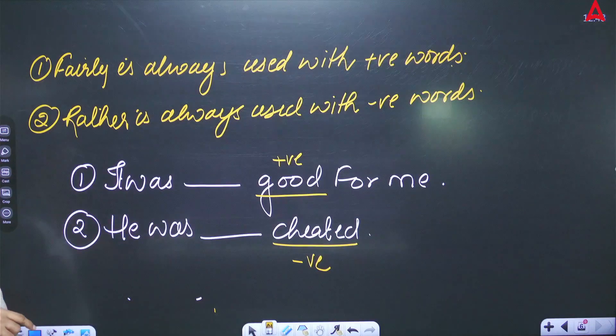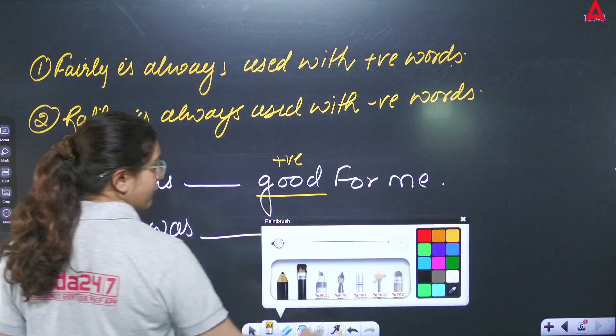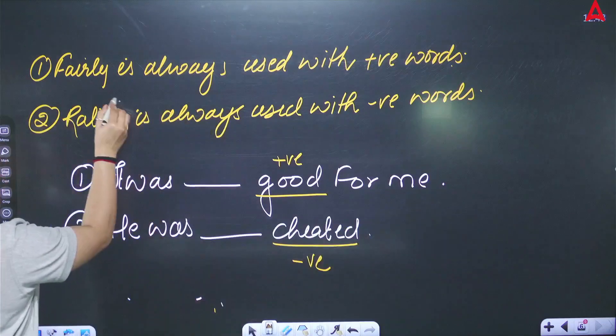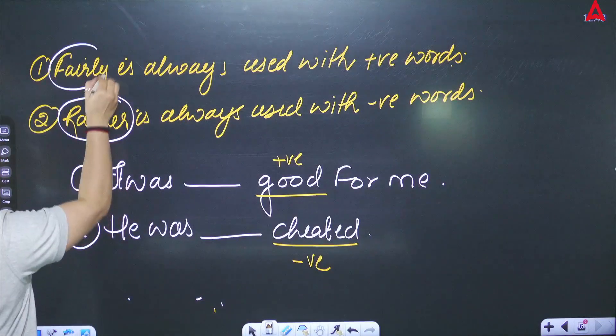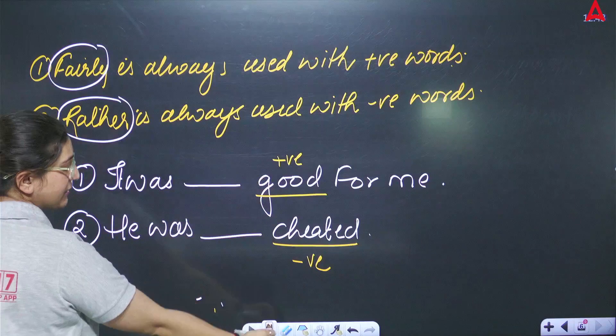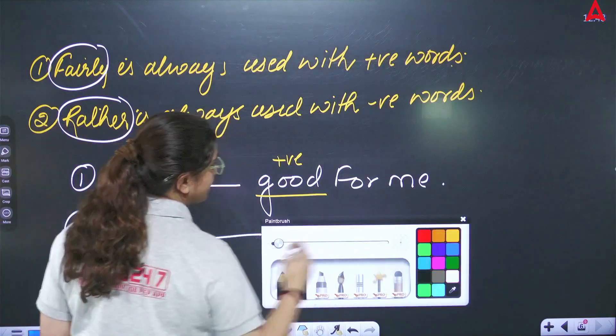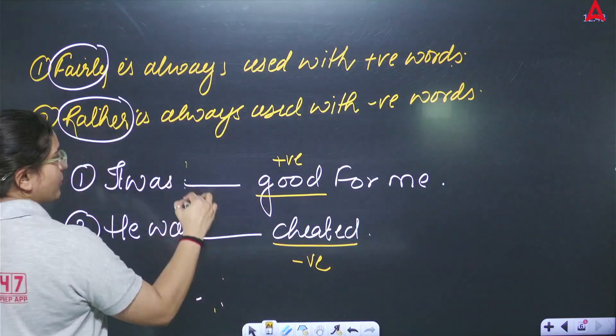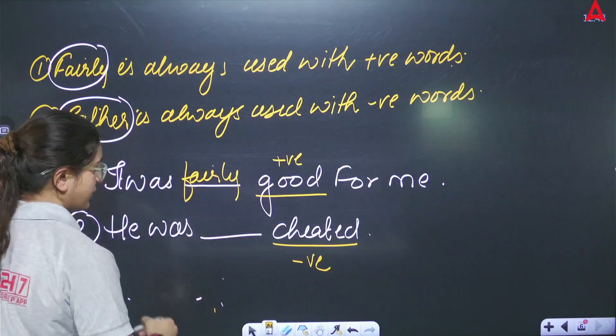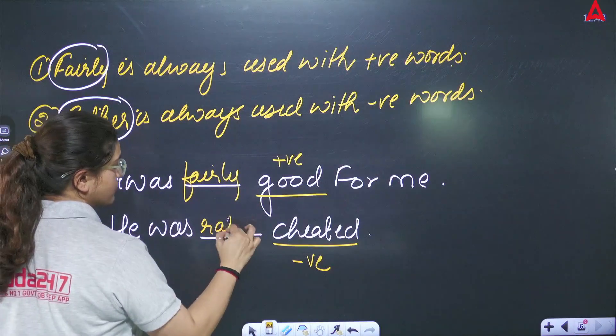So negative word you use with rather, whereas positive word you use with fairly. Good is a positive word, cheated is a negative word. You will put rather here and fairly here. I will say he was rather cheated.